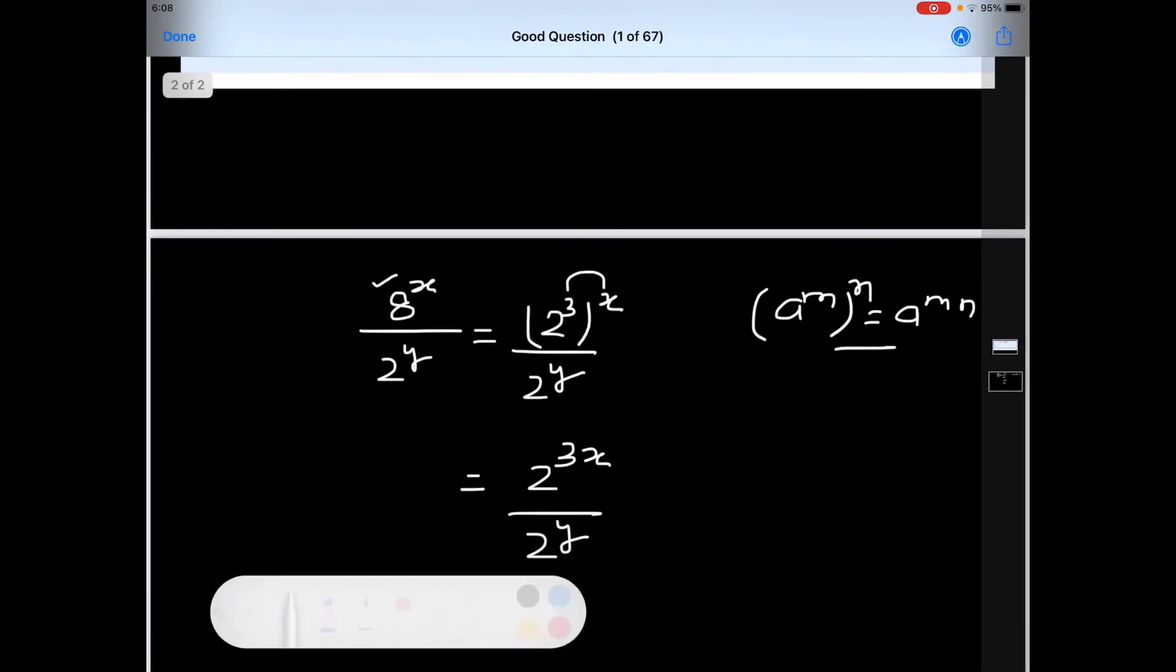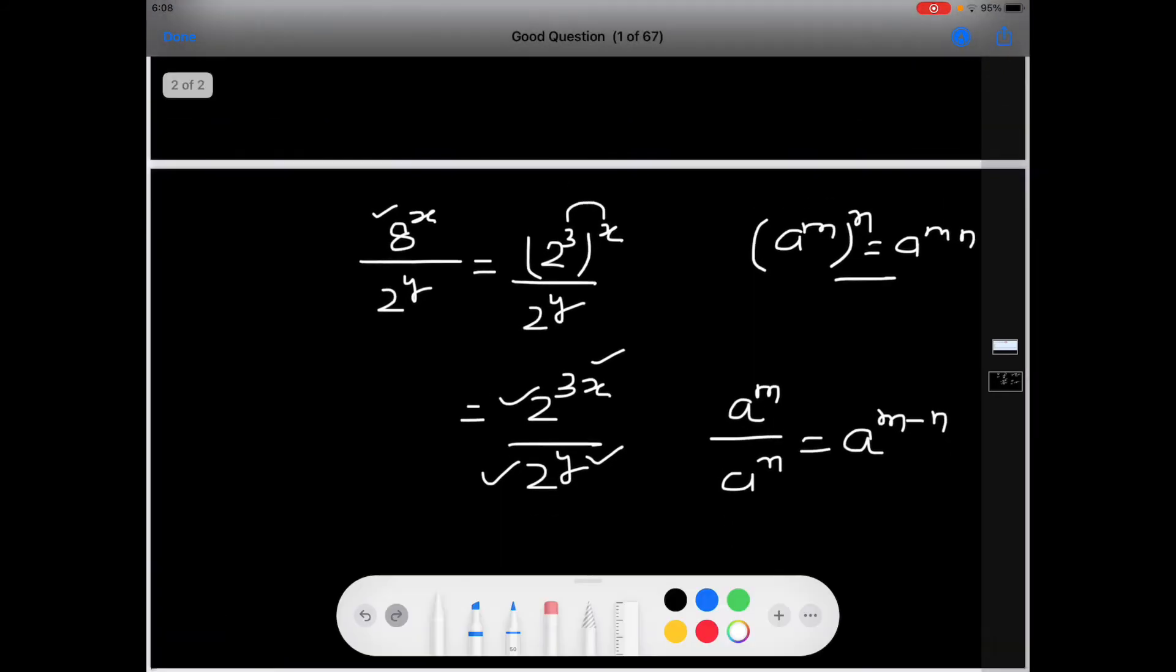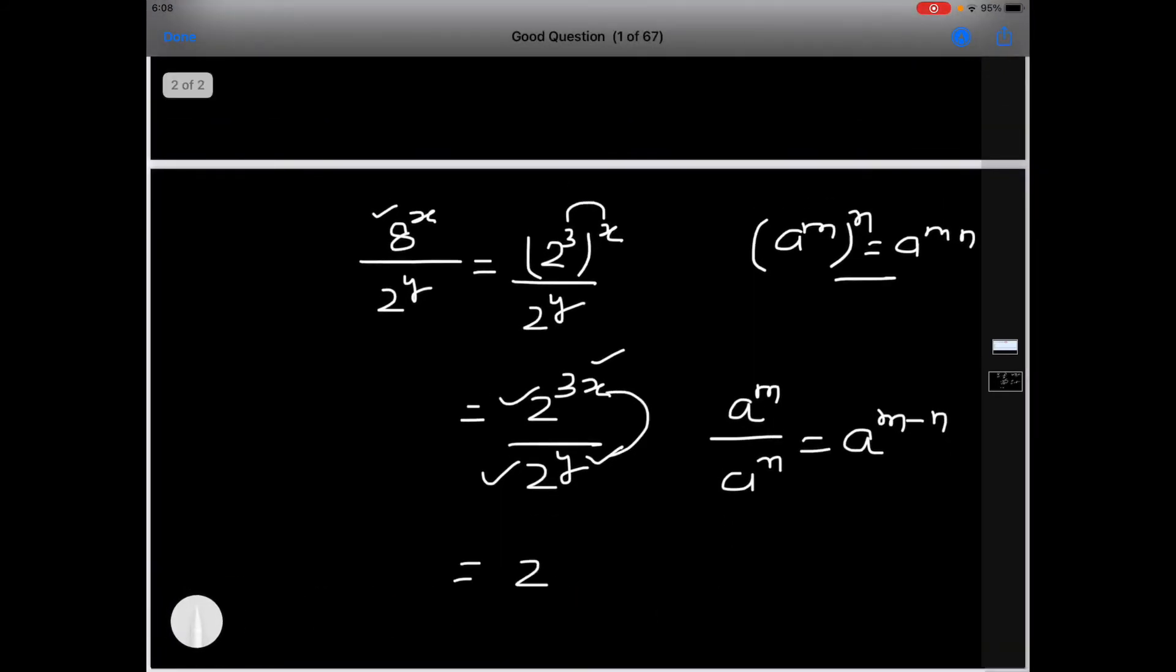Again we will use a simple formula of exponents and powers, a raised to the power of m divided by a raised to the power of n is equal to a raised to the power of m minus n. Means if the base is same and powers are different then powers will be subtracted. So we can write it as 2 raised to the power of 3x minus y.